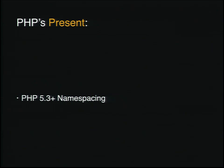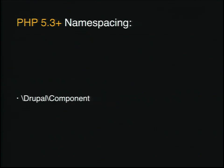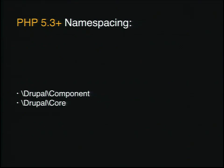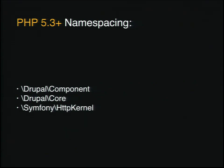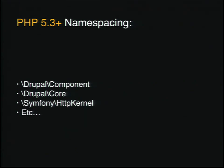Who in here has actually used 5.3 and namespacing? That's a pretty good chunk of the room. This changed a number of pretty big problems for us. We have a few of these within Drupal today, but just as some examples: the Drupal component is a namespace, Drupal core is a namespace, Symfony HTTP kernel is a namespace, et cetera. And what this actually means is that based upon the namespace that sits on a class name, we know where to find it, which means we can do a lot of interesting things like autoloading and building class maps. This means that if Drupal component has a query class in it and Drupal core has a query class in it, they don't conflict because they actually have different names.